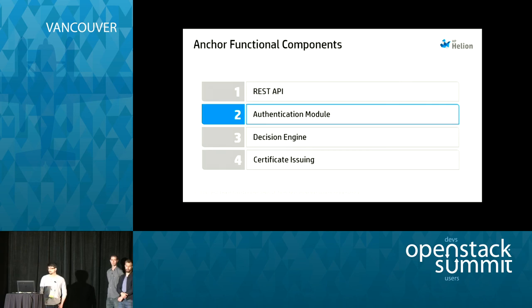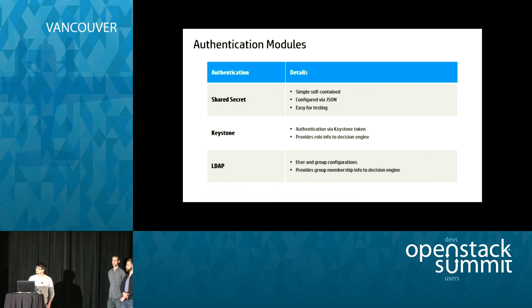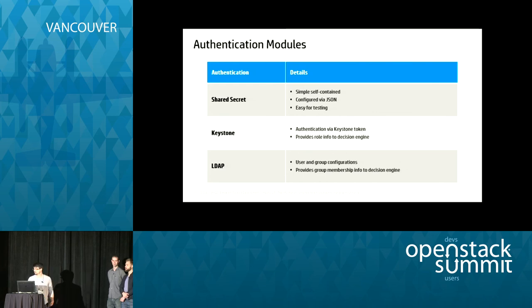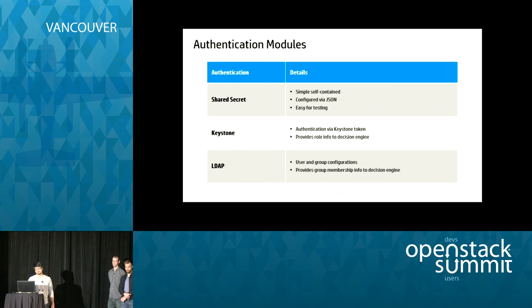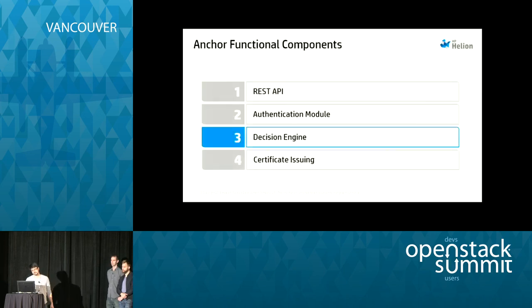Once the REST API has verified all the expected fields are present, the next step is the authentication module. Anchor ships today with three authentication modules configurable through a JSON configuration file: a basic shared secret module using a pre-configured secret stored in the config file — simple but self-contained, good for testing; a Keystone-based module which uses a Keystone token and can pass role information into the decision engine; and an LDAP implementation which passes through group membership.